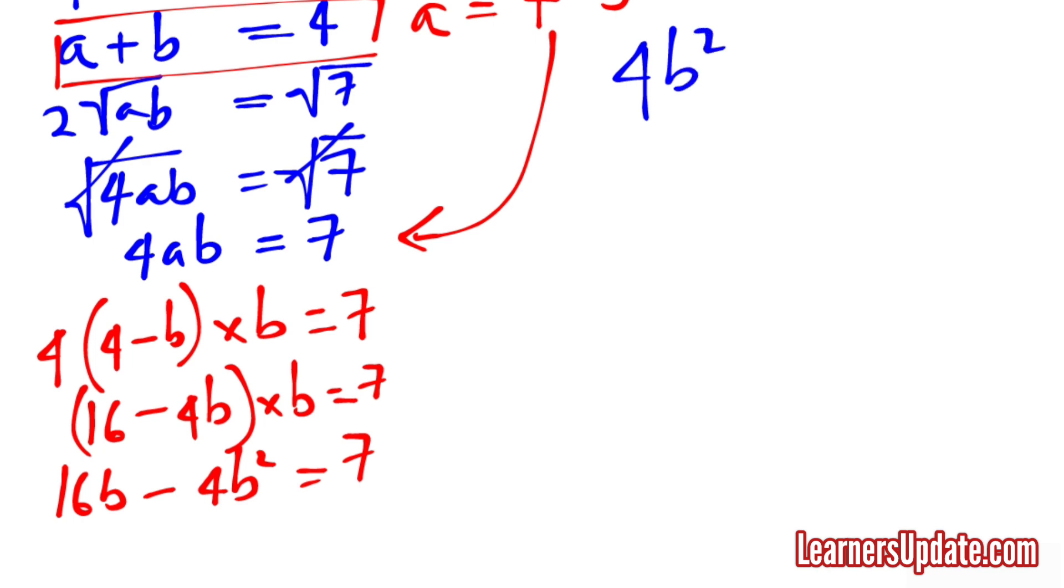This gives me 4B squared minus 16B plus 7 equals 0. Now this is what I need to solve as a quadratic equation to get the value for B which can then be substituted to get my A.